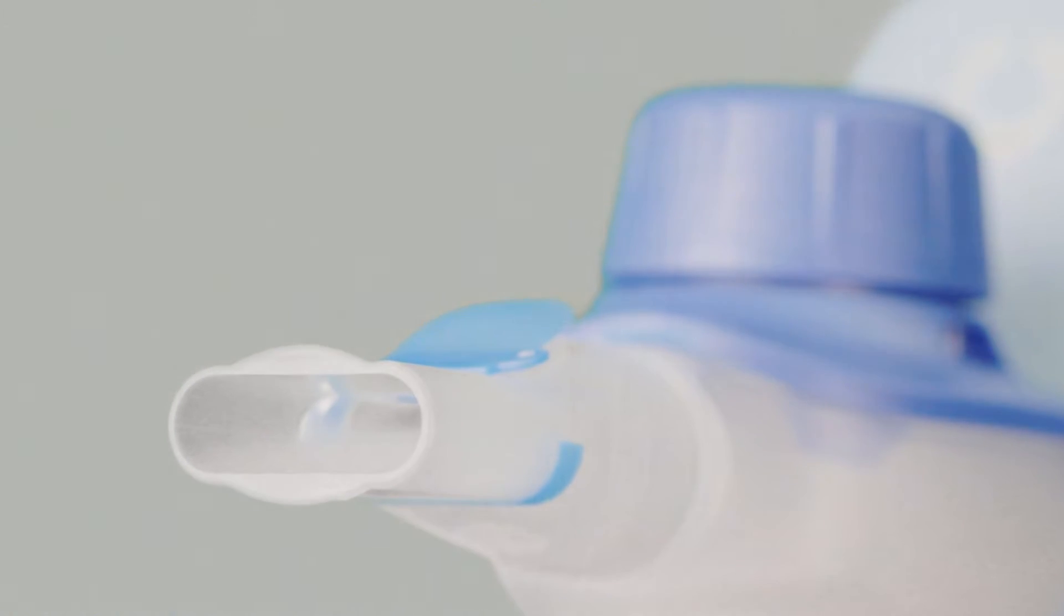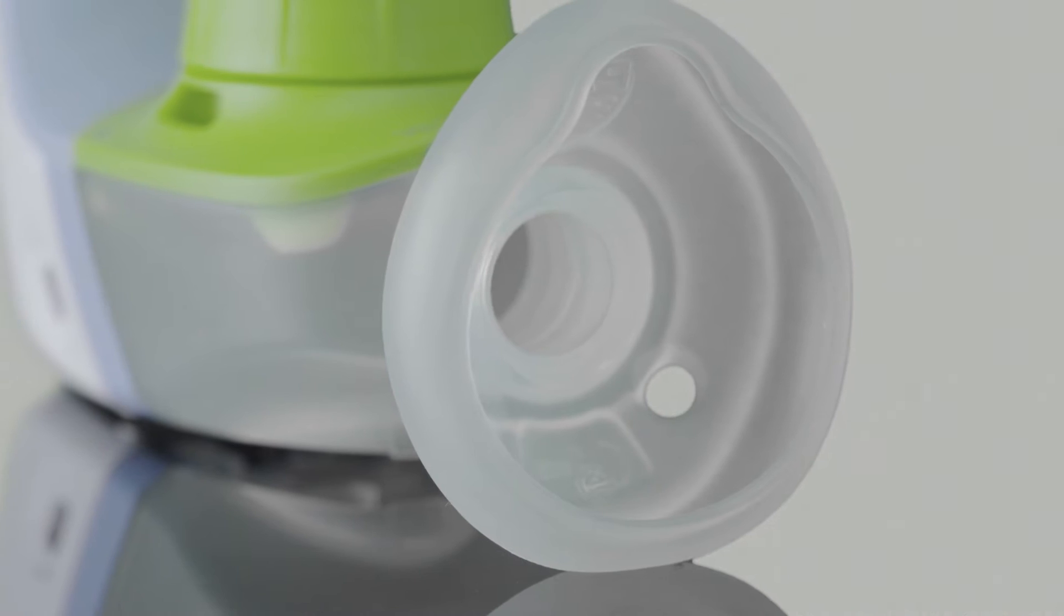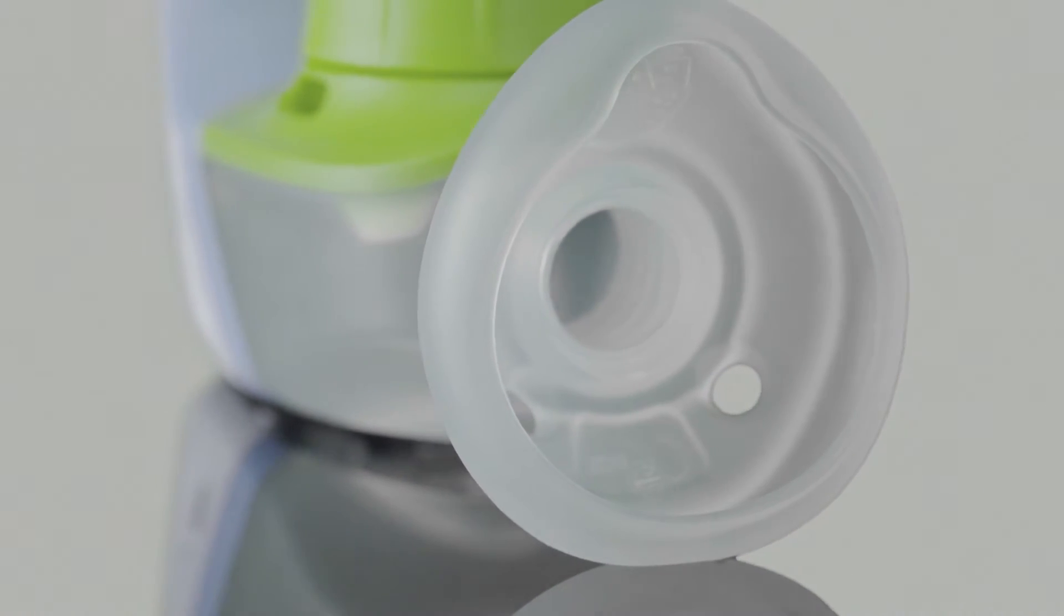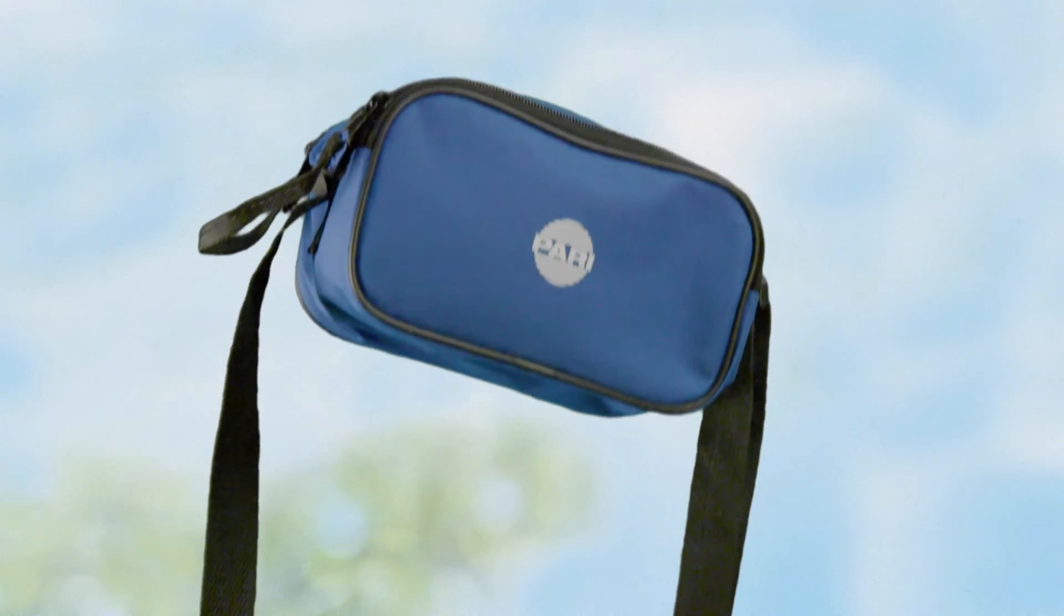Velox with a mouthpiece for adults and children from 3 years of age. Velox Junior with a mouthpiece and soft baby mask for babies and small children up to 3 years of age. Both devices come with a practical bag for safe and hygienic storage.